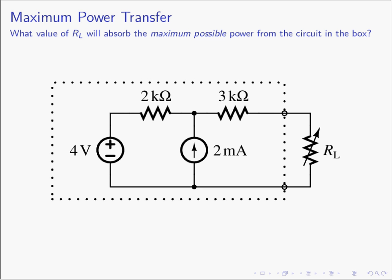The scenario we have in today's lecture is that we have a circuit inside of a box. The question is: what value of R sub L do I attach to this circuit so that R sub L will absorb the maximum possible power? We have the circuit in the box and we can't do anything about it — it's given to us. We have to use it for whatever reason, but we are given the freedom to choose R sub L, and we'd like to absorb the maximum possible power from this circuit.